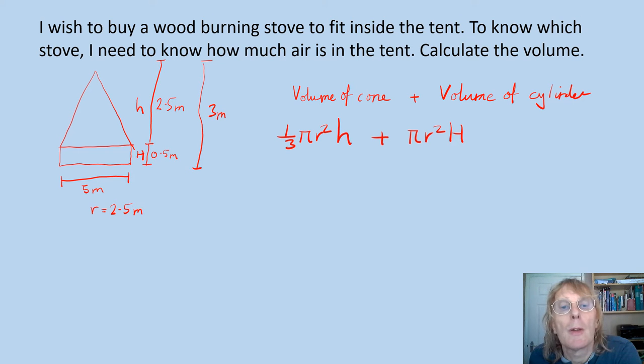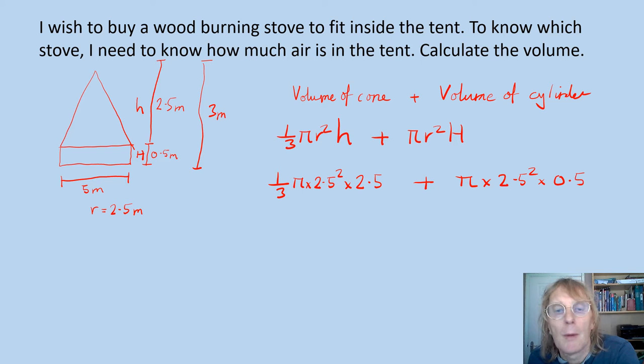So this first one will be one third times π times 2.5 squared times h is 2.5. And then I'm going to have to add that to the volume of the cylinder which is going to be π times r squared which is 2.5 squared times h which is 0.5. So I'll just grab my calculator and write them out.